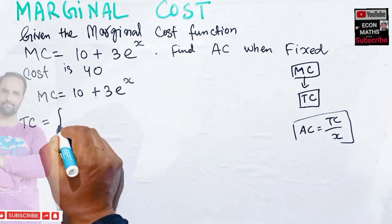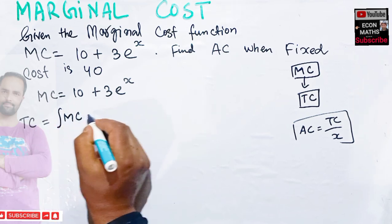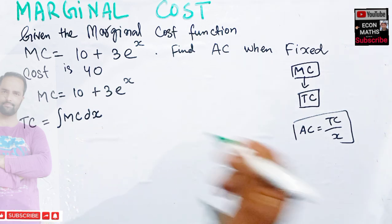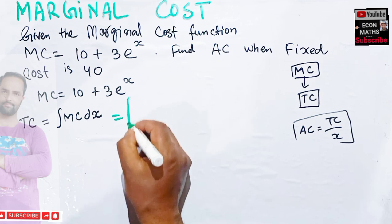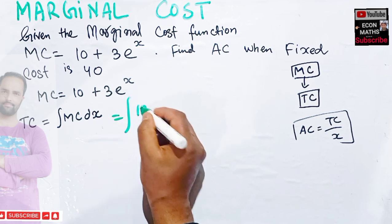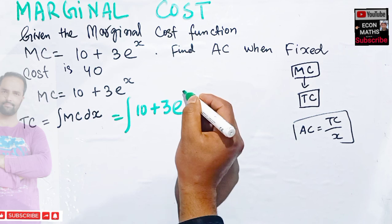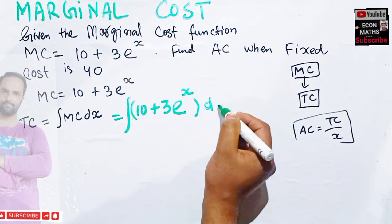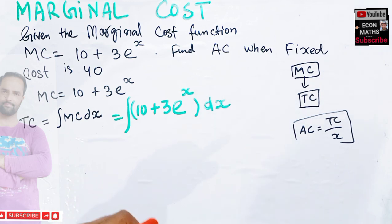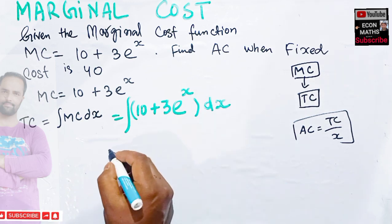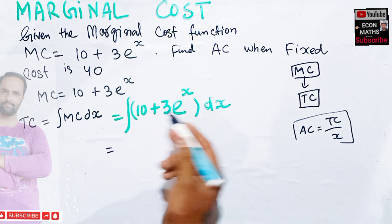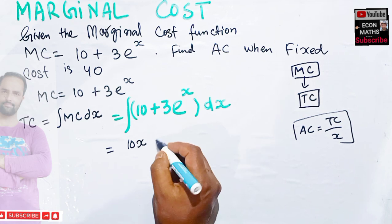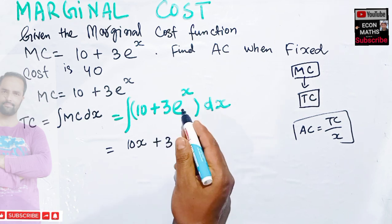To find total cost from marginal cost, we use integration. Total cost is simply the integral of marginal cost with respect to output dx, which means we have to take the integral of 10 + 3e^x with respect to x. The integral of 10 is simply 10x by the power function rule, plus 3 times the integral of e^x.